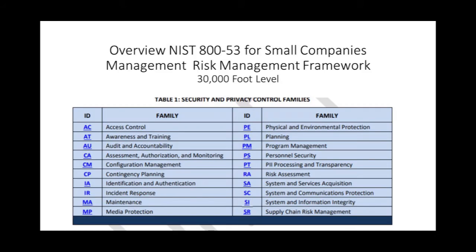This family of security controls — security and privacy controls described in this video — have a well-defined organizational structure. The family has 20 security controls. Each family contains security and privacy controls related to the specific topic for that family. A two-character identifier uniquely identifies each control family. The security and privacy controls may involve aspects of policy, oversight, supervision, manual processes, and automatic mechanisms implemented by systems or actions by individuals.